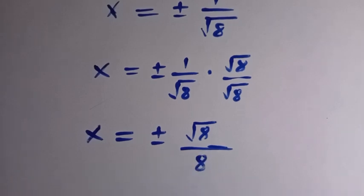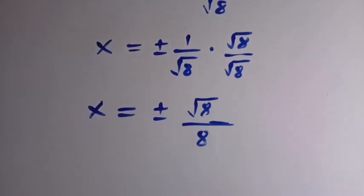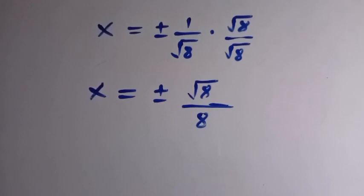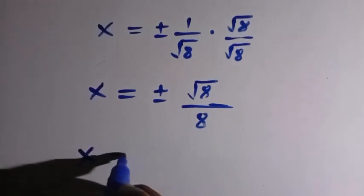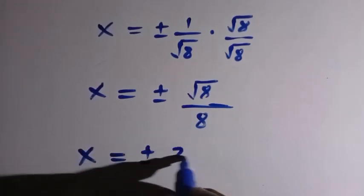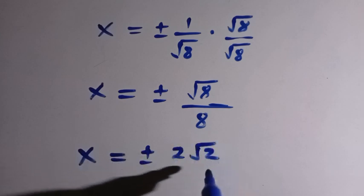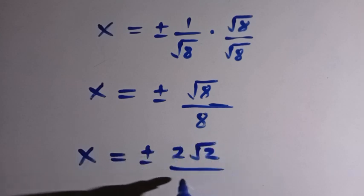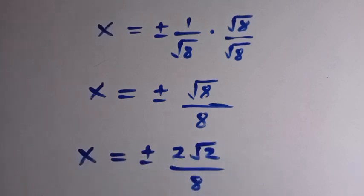Then, for square root of 8, the result in our simplest form is 2 root 2. So this divided by 8.